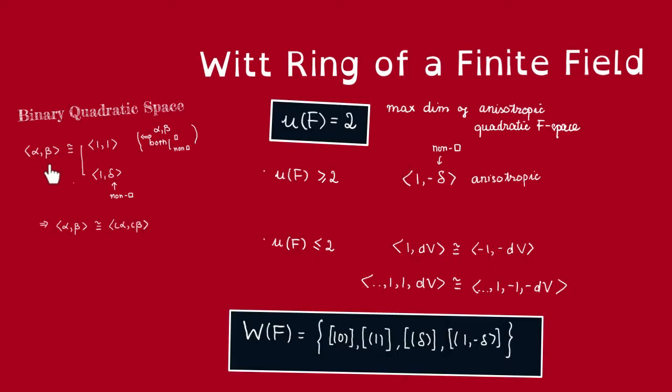Thus, in the particular case of a binary quadratic space, it can only have one of the following forms. It would be isometric either to this case. This is when alpha and beta are both a square or non-square. Remember, we have proven before that if we have a non-square beta, delta non-square, then these are also isometric to 1,1.